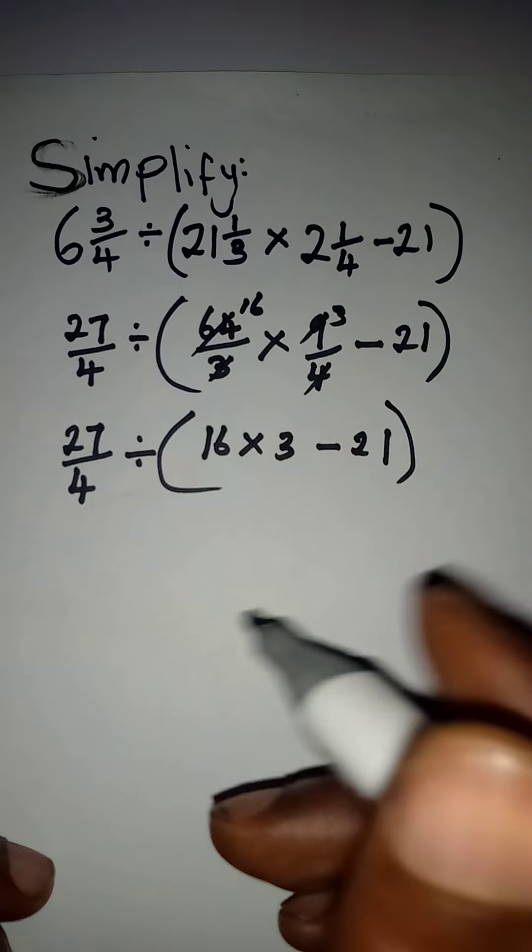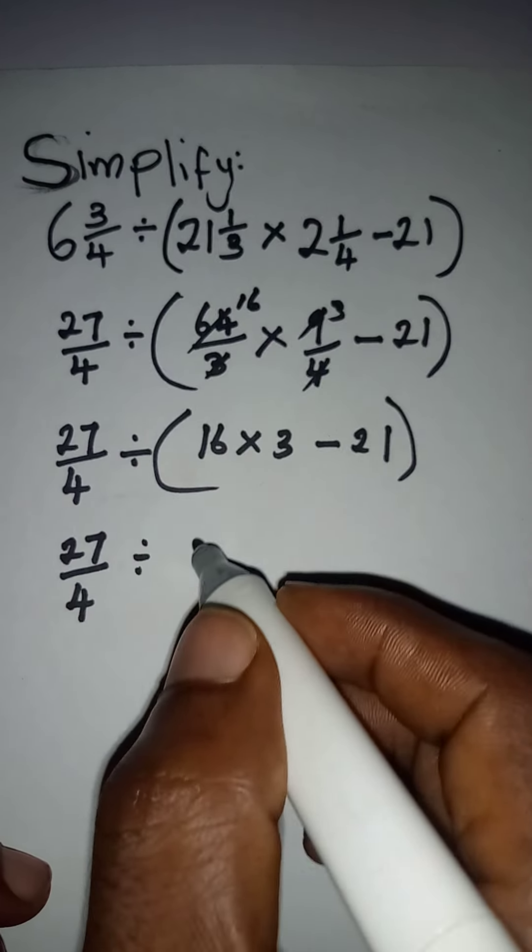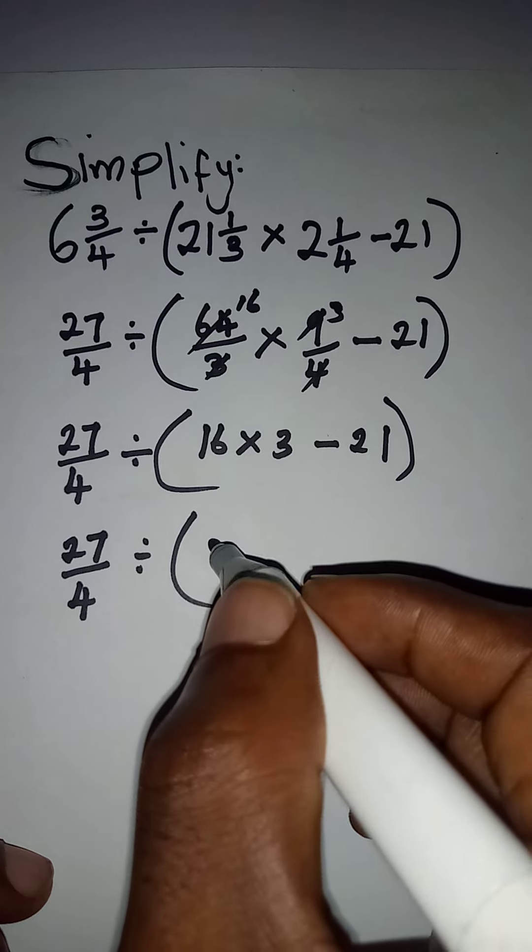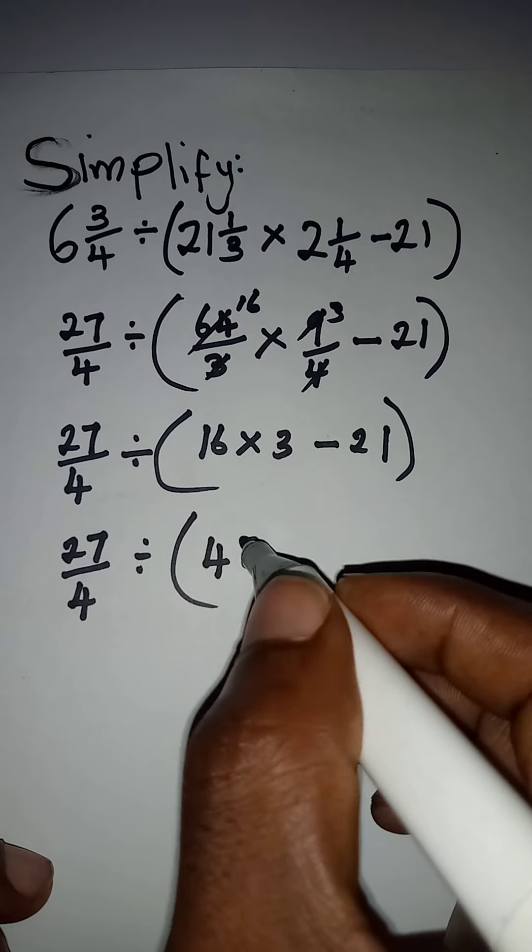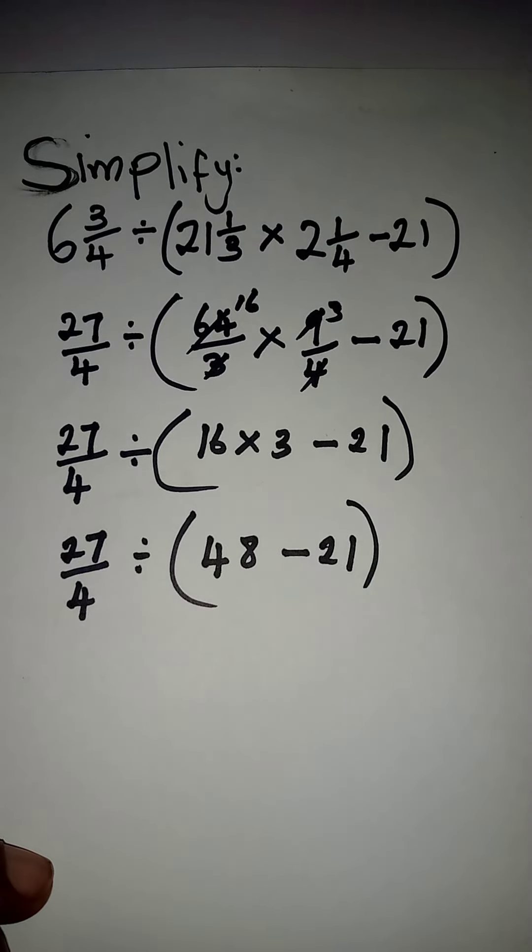I will still deal with the bracket, so I have 27 over 4 divided by open bracket, 16 times 3 is 48, then minus 21, close this bracket.